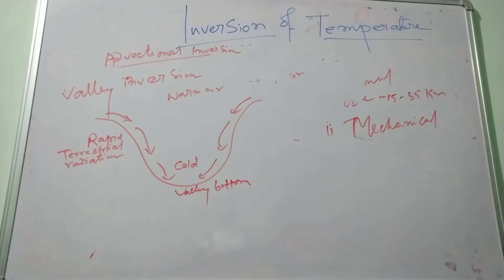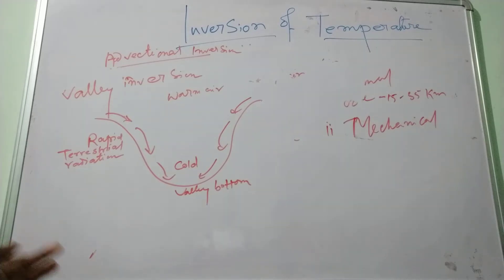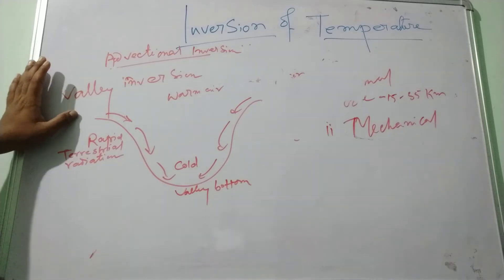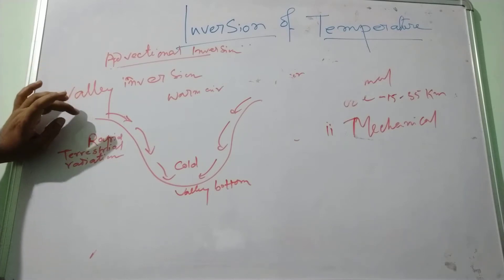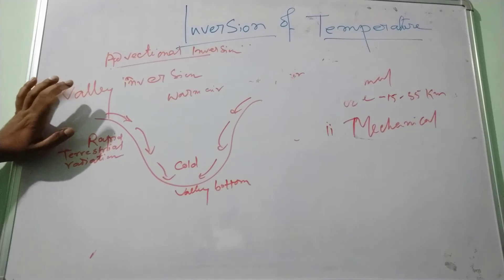Valley inversion generally occurs in mountainous valley regions due to radiation and the vertical movement of air, which is called the vertical advectional inversion of temperature. The temperature of the upper part of valleys in mountainous areas becomes exceedingly low during winter nights because of the rapid rate of heat loss of the surface to terrestrial radiation.